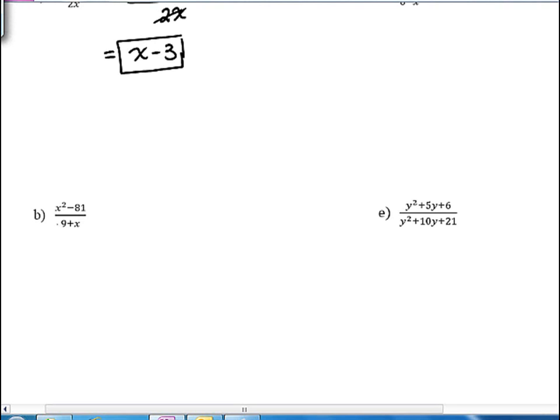In our next example here, x squared minus 81 over 9 plus x. So x squared minus 81, in fact, remember this is the difference of two perfect squares, and so it factors as x plus 9 times x minus 9.